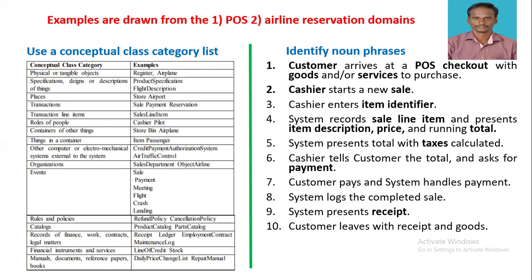The third category is place. For the POS system, it is store, and for airline reservation, it is airport. The next category is transaction. For POS, it is sale and payment, and for airline reservation, it is reservation.